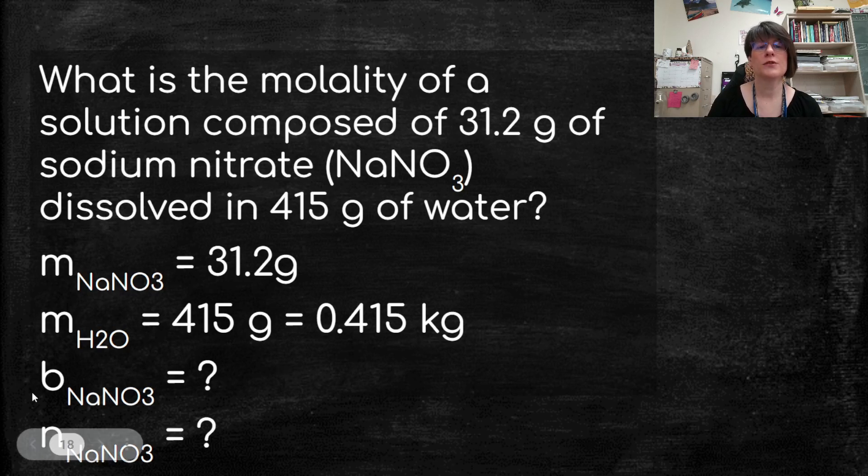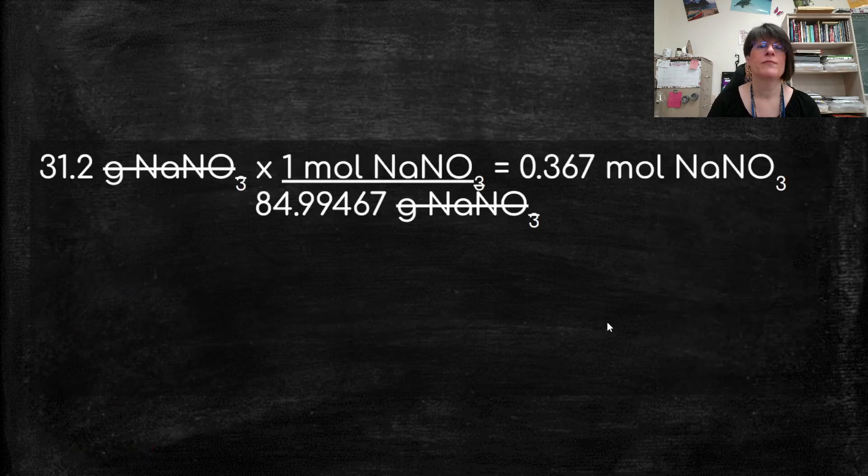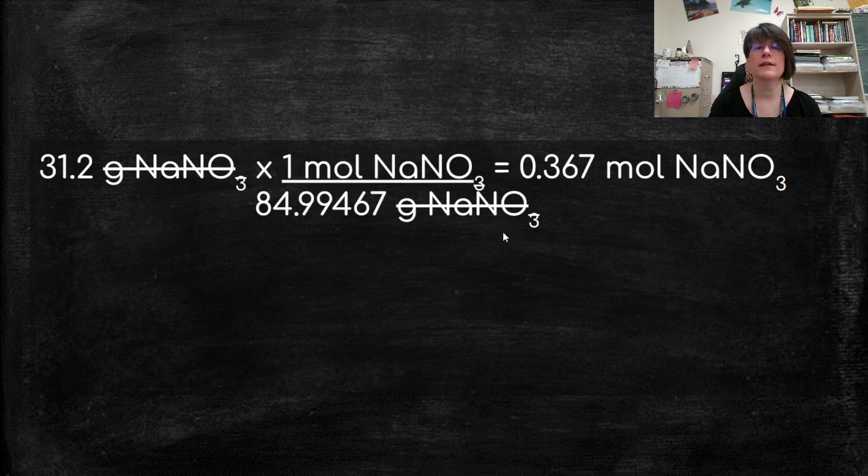Now I need to figure out the molality, which I'm after, but in order to find molality, I also need to know the number of moles and my cursor is getting in the way. I need to know the number of moles, but I can find that from my mass of sodium nitrate, using molar mass. So I do that. I start out with my 31.2 grams of sodium nitrate. I calculated my molar mass, okay? Using my conversions. And so 84.99467 grams of sodium nitrate is one mole of sodium nitrate. And I get 0.367 moles of sodium nitrate.